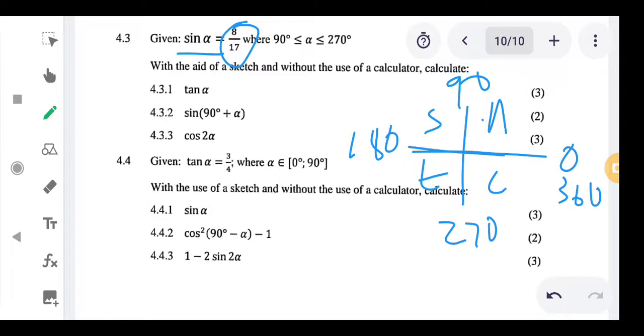We have 8 over 17. Is 8 over 17 something positive or something negative? It's positive, everyone can see it's positive. What does that mean? It means the whole sin(α) should be positive because the left-hand side and the right-hand side are equal.